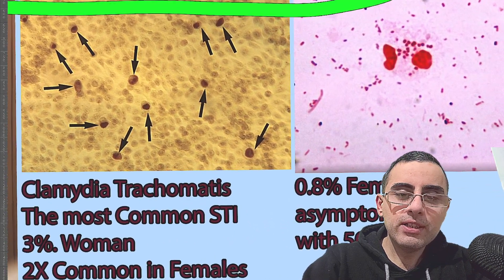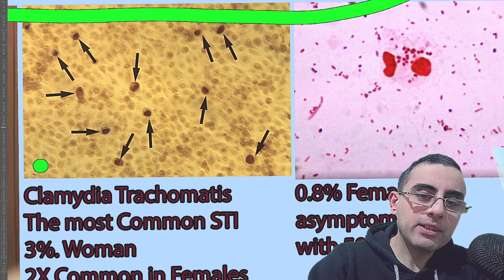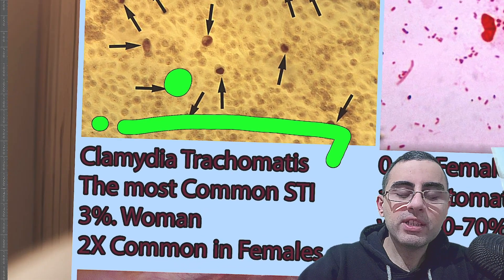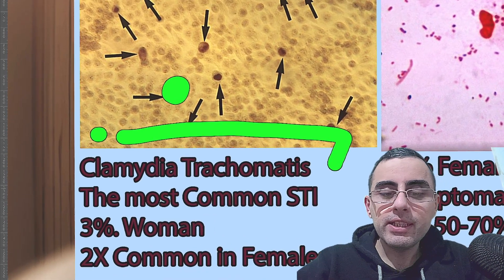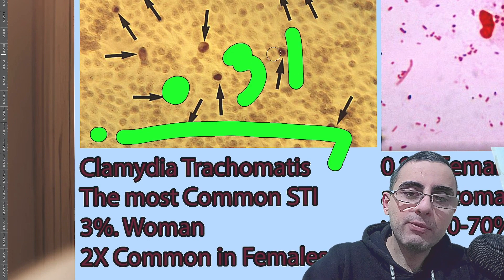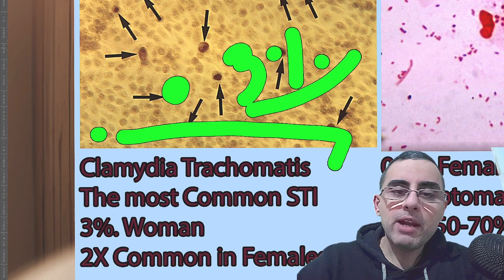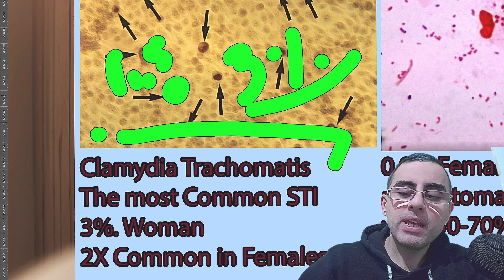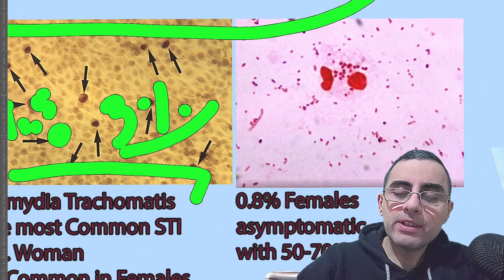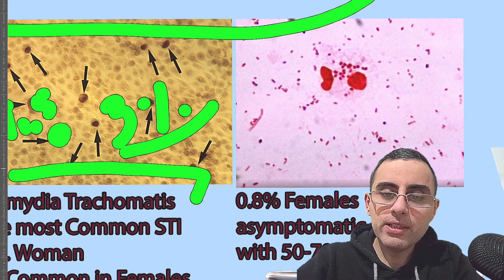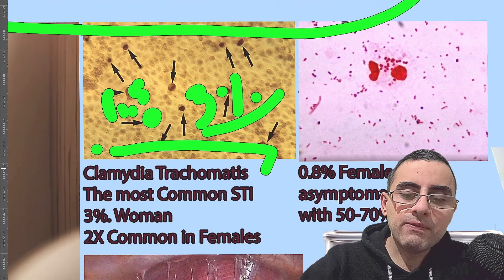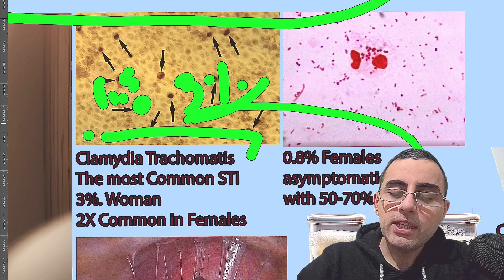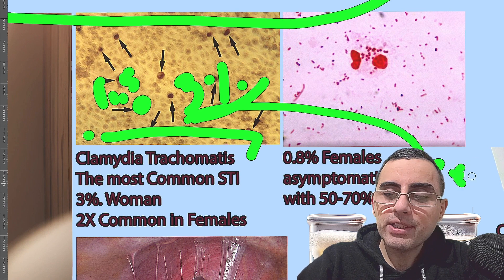The first and most important difference is that Chlamydia is caused by a different bacteria called Chlamydia trachomatis. It is the most common sexually transmitted disease, affecting around 3% of young women and around 1.5% of men, so it is twice less common among men. Gonorrhea affects around 0.8% of females. Usually both of these infections are asymptomatic in around 60 to 70 percent of cases.